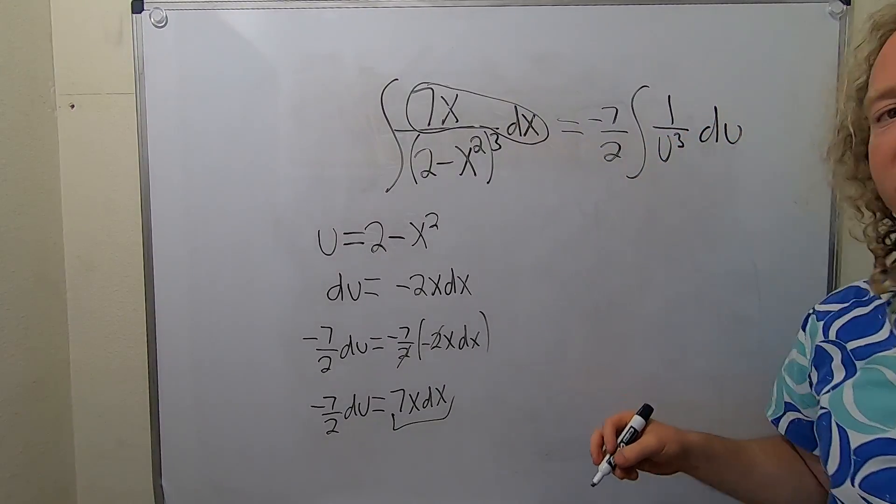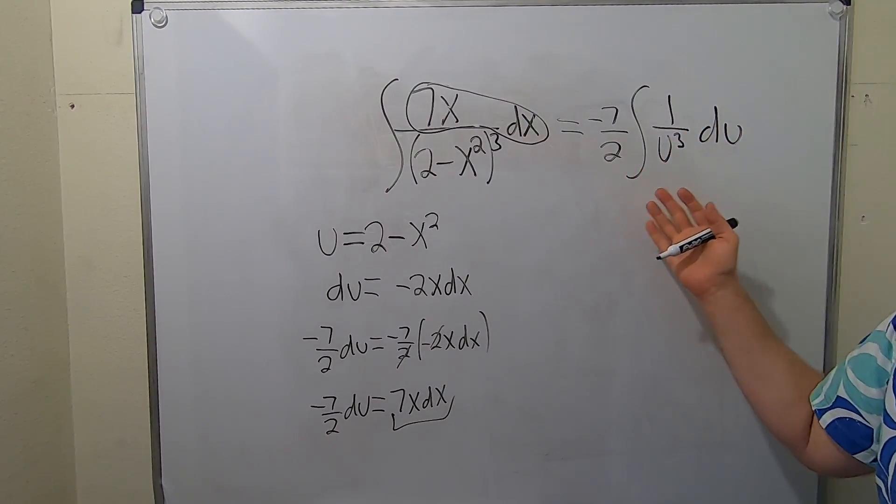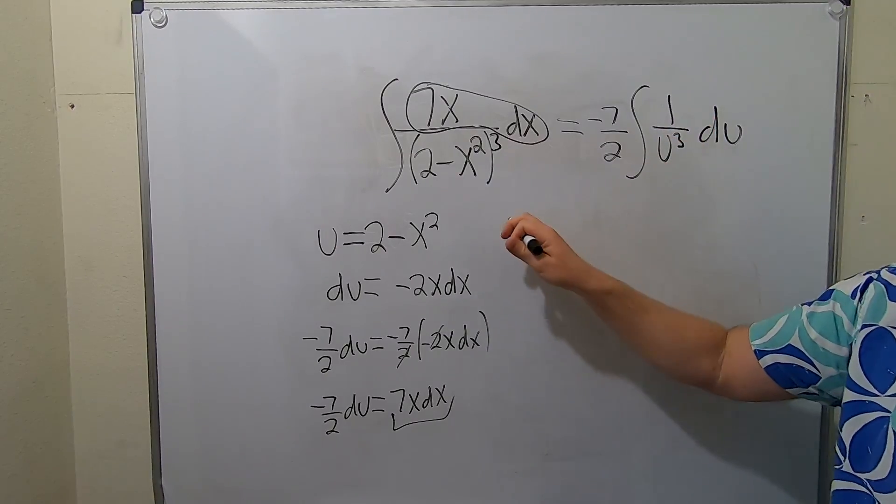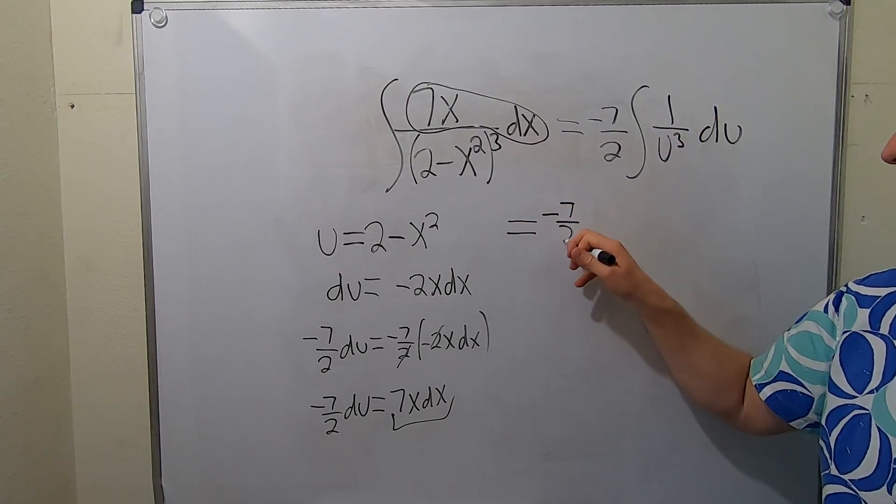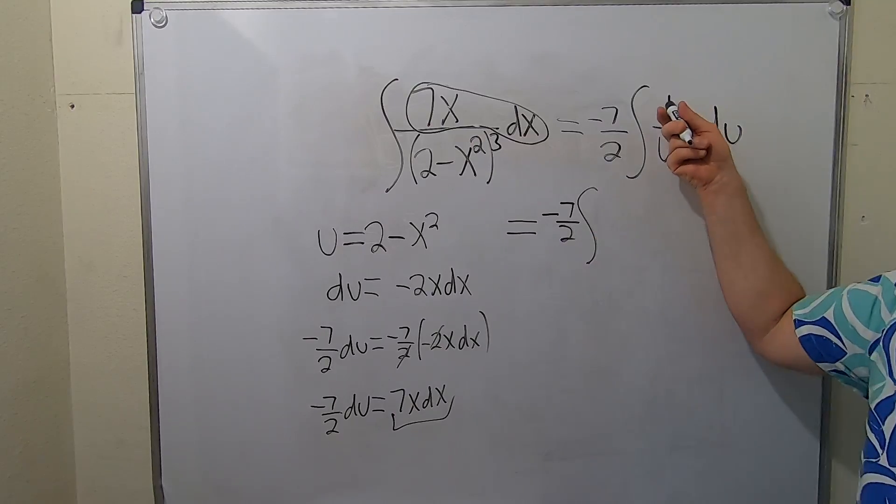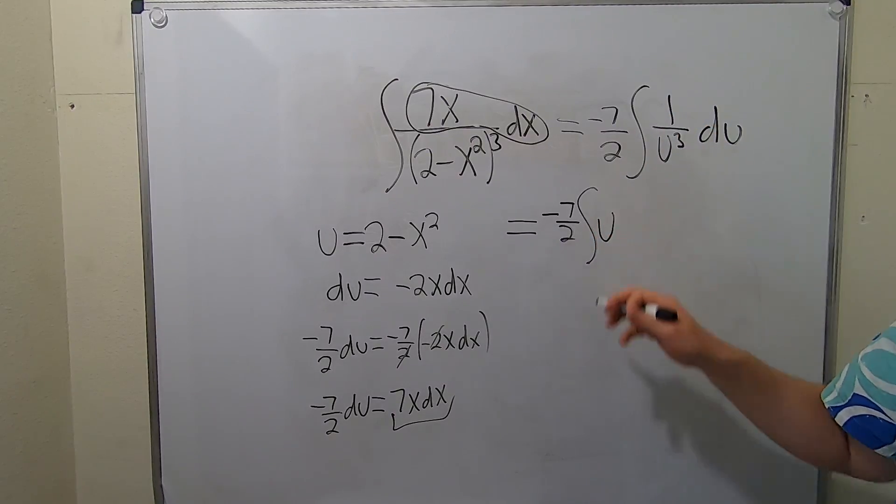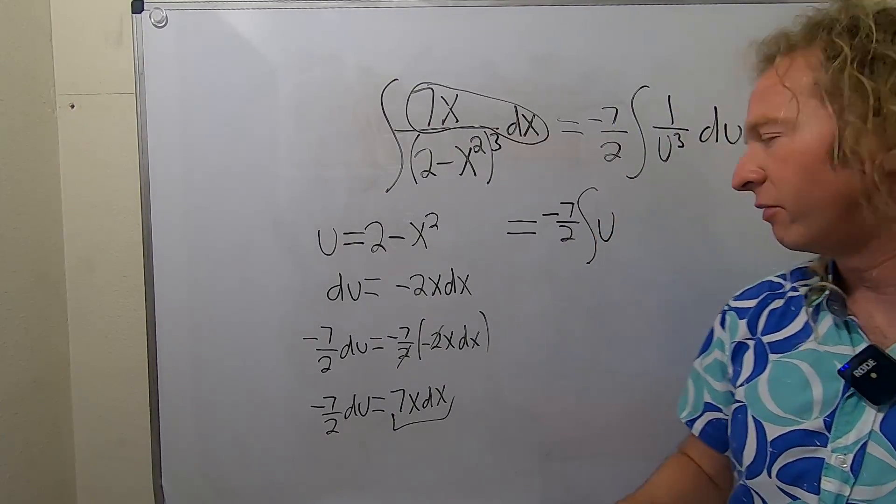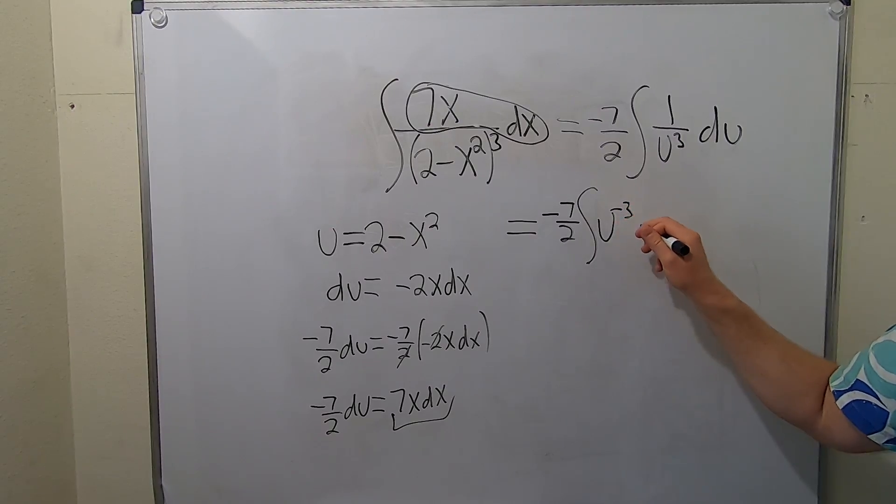To integrate this, we're going to write it as u to a power. We'll bring it upstairs. This equals negative 7 halves integral. When you bring it upstairs, the exponent becomes negative, so it's negative 3 du.